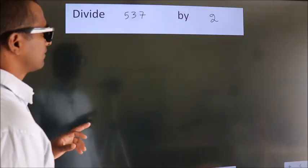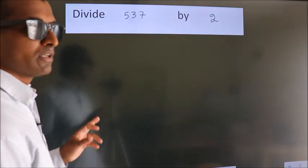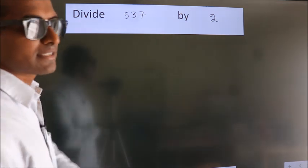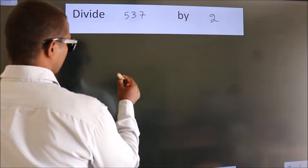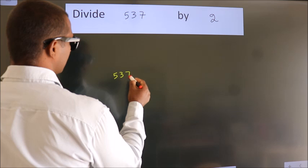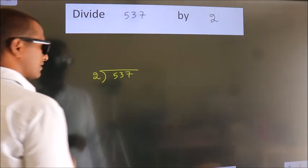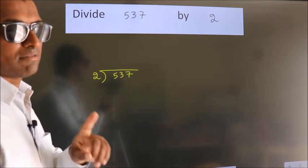Divide 537 by 2. To do this division, we should frame it in this way. 537 here, 2 here. This is your step 1.